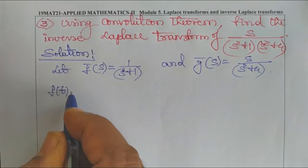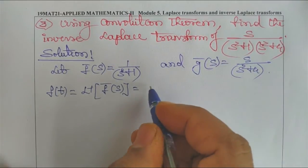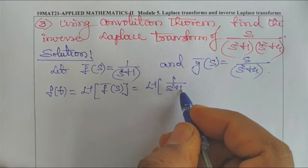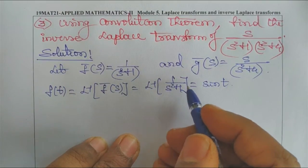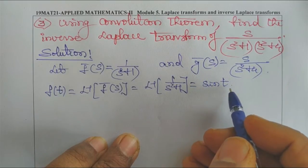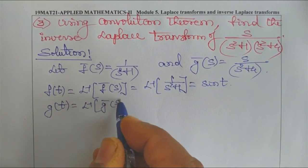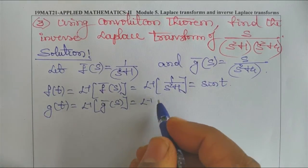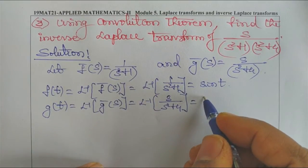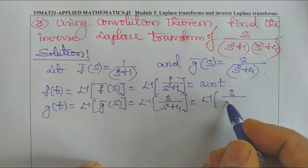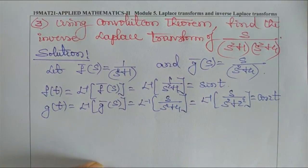F(t) is the inverse Laplace transform of F̄(S), that is L⁻¹ of 1/(S² + 1). Since 1/(S² + 1²) gives A = 1, this equals sin(t). Next, G(t) = L⁻¹ of Ḡ(S) = L⁻¹ of S/(S² + 2²), which is cos(2t).